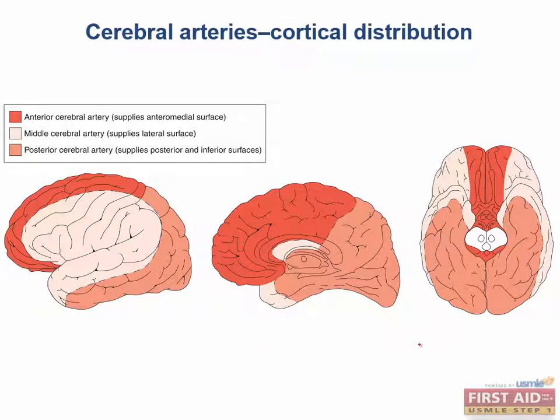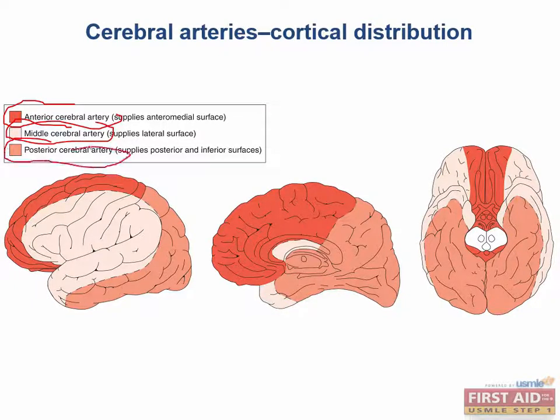The brain receives blood from the anterior cerebral artery, the middle cerebral artery, and posterior cerebral artery. It is very important to know how these three main arteries supply regions of the cortex.